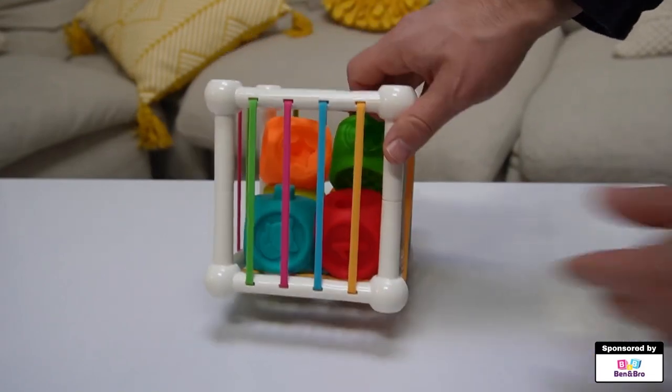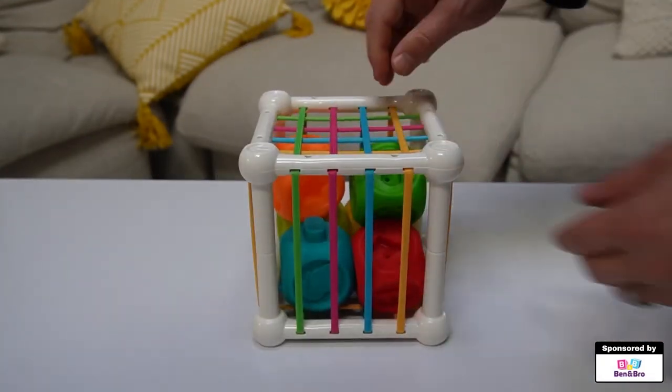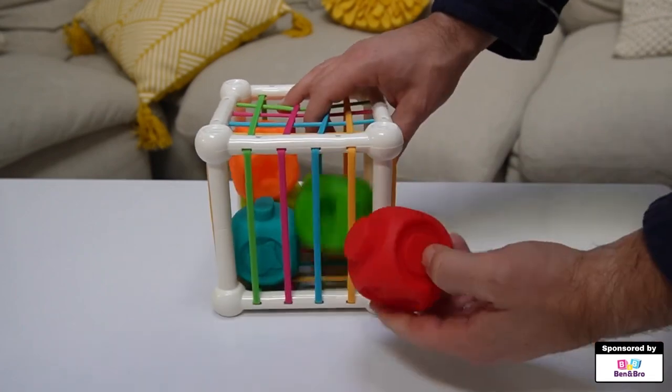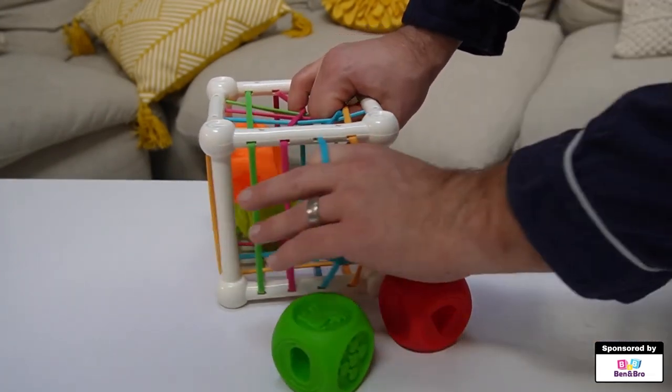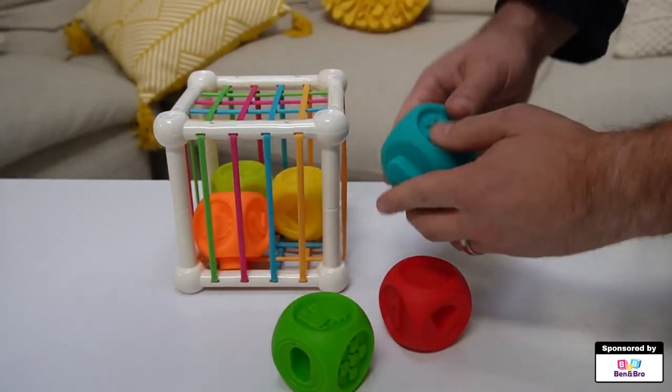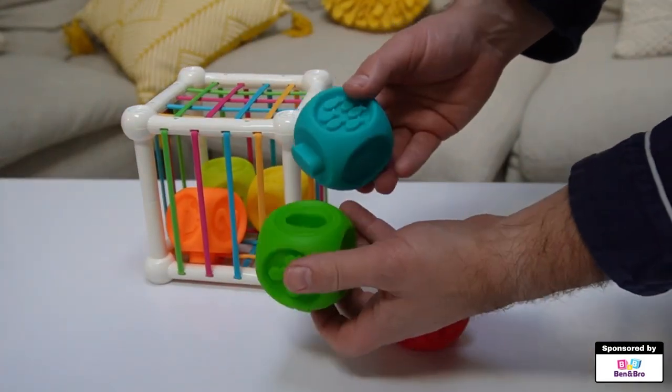Okay, y'all, this is the Ben and Bro Baby Shape Sorter Toy for early learning. This one is actually really cool. It actually says on here that it's good for Montessori toys. I think it's 10 months and up for this one.